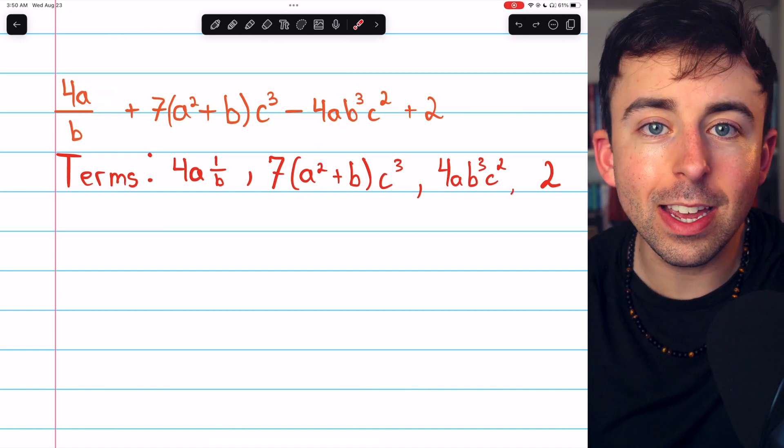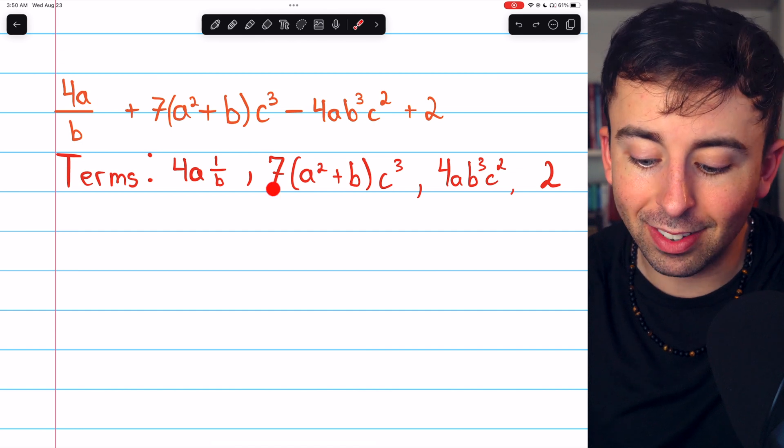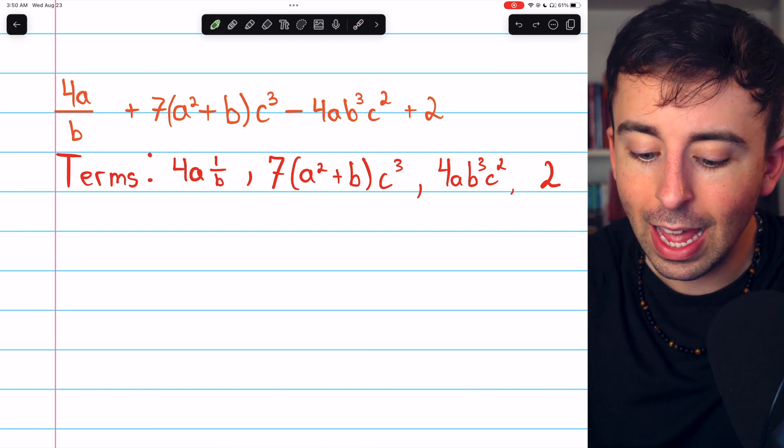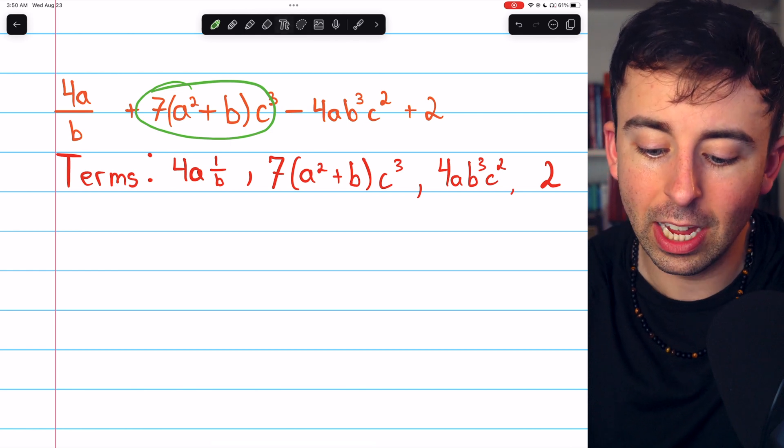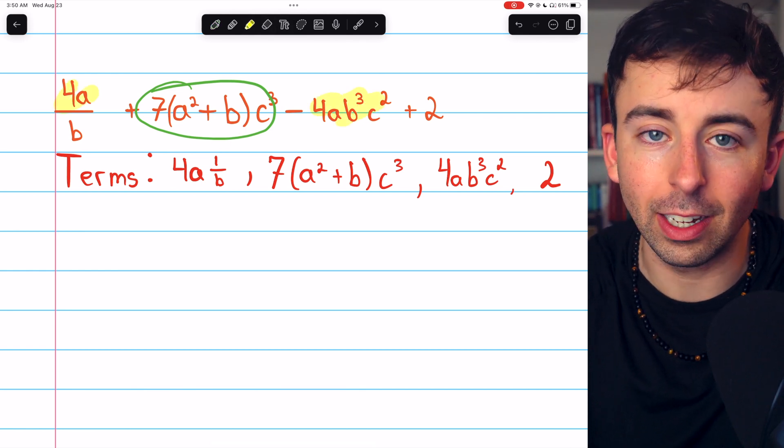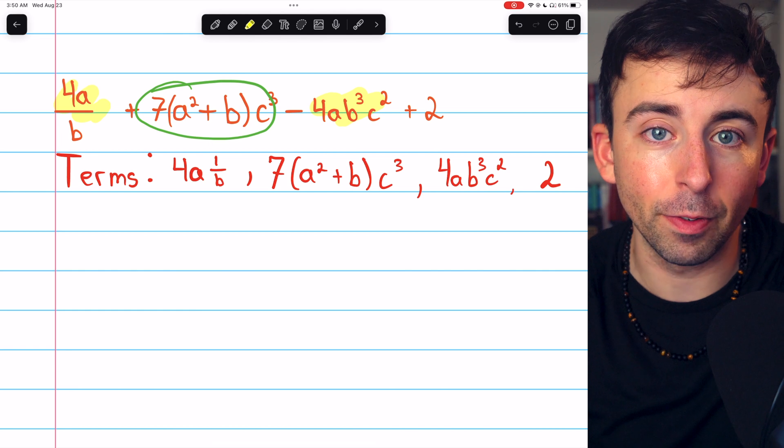In fact, a squared plus b is being multiplied by 7 and c cubed. And it's that whole product that's being added or subtracted with the other terms of the expression. And that's the difference.